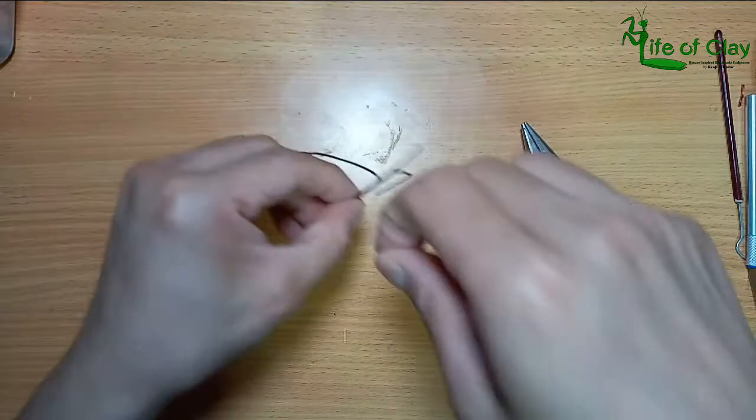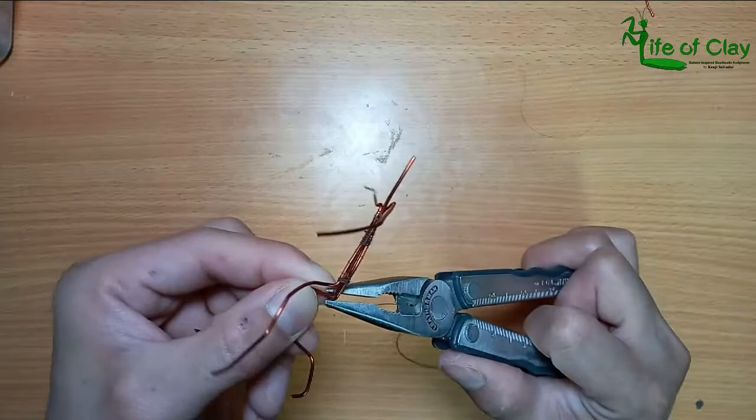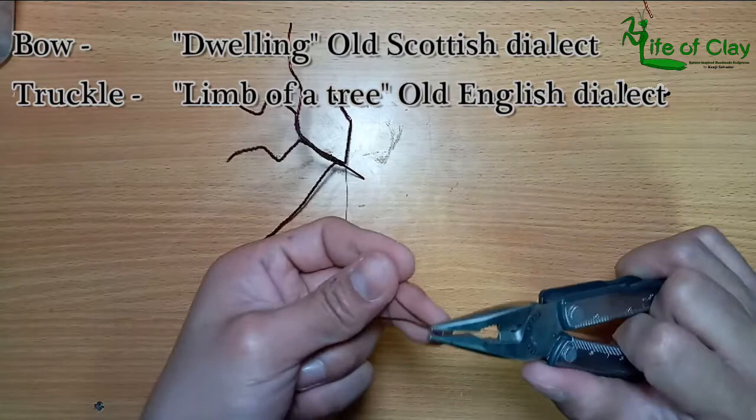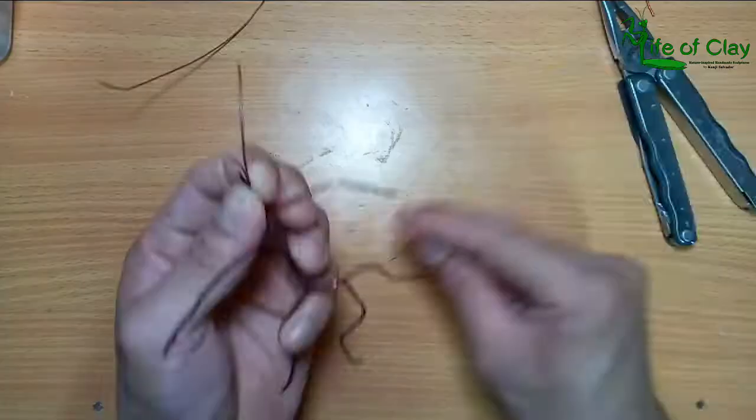I tie all the wires together using a sewing yarn. Bow was an old Scottish dialect means dwelling and truckle means limb of a tree in old English dialect. This means to take a subordinate position.